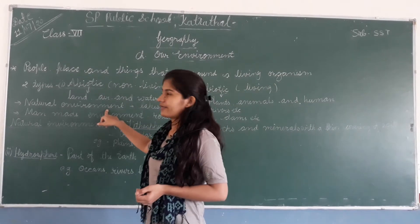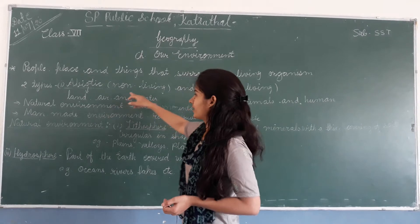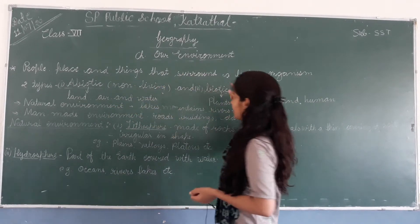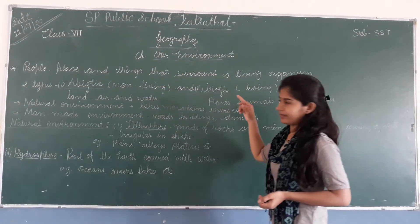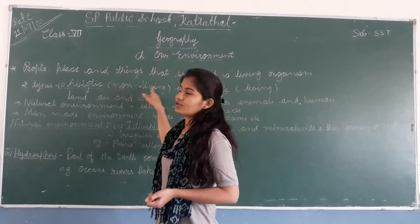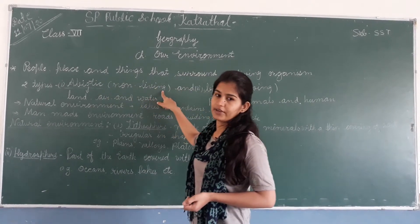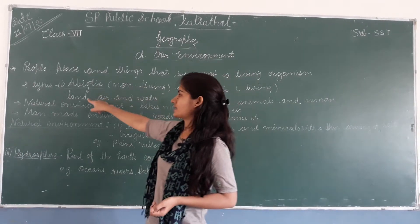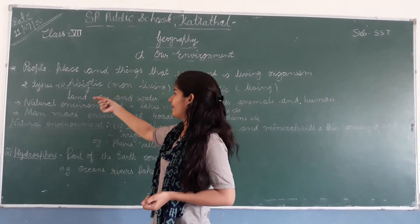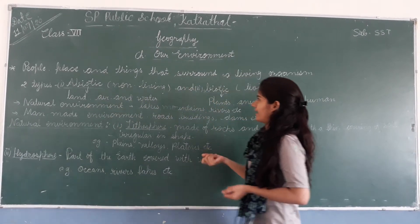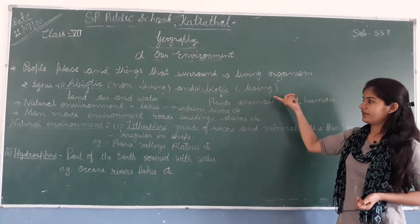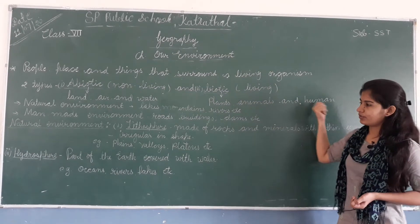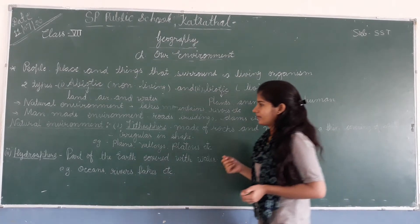If we talk about the natural environment, it is divided into two parts: biotic and abiotic. In abiotic, there are all non-living things — things like land, air, and water. In biotic, there are all living things like plants, animals, and human beings.